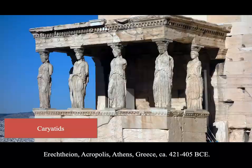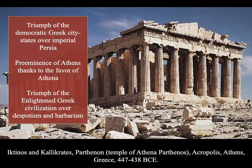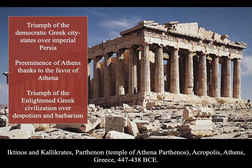We are moving on to the Parthenon, also known as the Temple of Athena Parthenos, the main structure discussed in The Secrets of the Parthenon. The Temple of Athena Parthenos represents three different ideas: the triumph of the democratic Greek city-states over imperial Persia; the preeminence of Athens thanks to the favor of Athena; and the triumph of enlightened Greek civilization over despotism and barbarism — all of which link to their defeat of Persia. We'll see all of these in the artistic elements of the Parthenon itself.